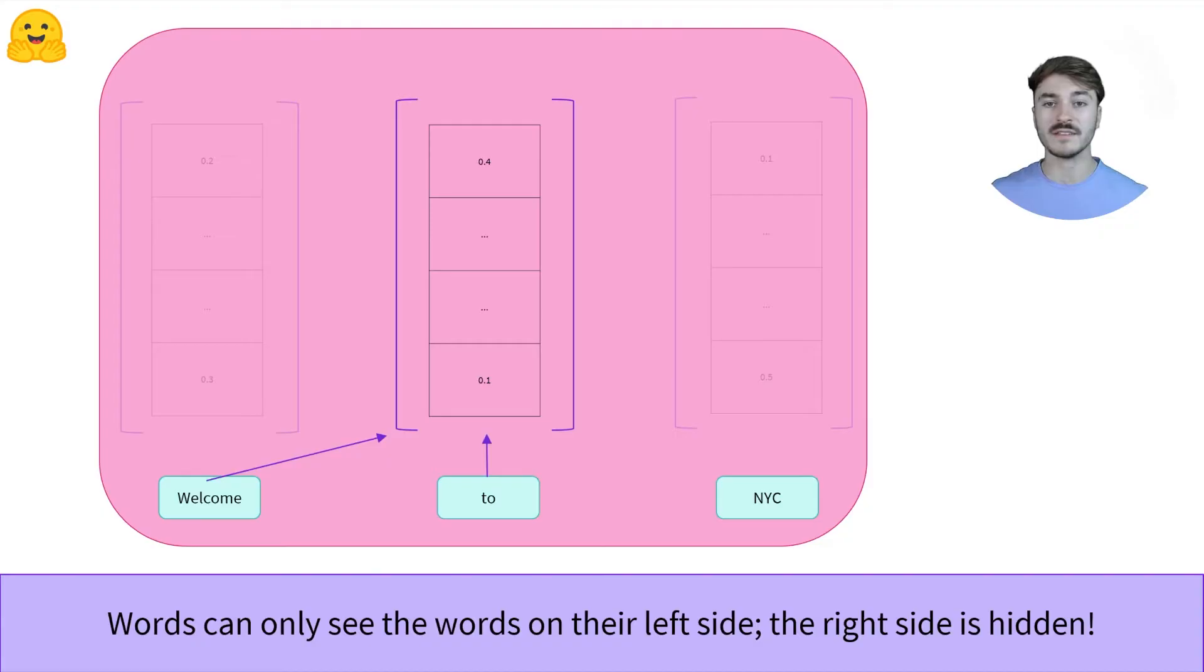Rather than benefiting from all the words on the left and right, so the bi-directional context, decoders only have access to a single context, which can be the left context or the right context.